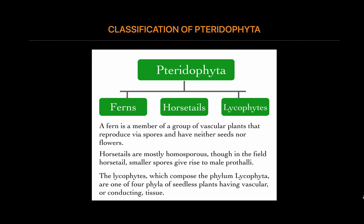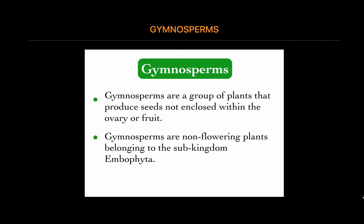This is about Pteridophyta. Now let's study about the fourth subdivision of Kingdom Plantae, Gymnosperms. Gymnosperms are a group of plants that produce seeds not enclosed within the ovary or fruit. The word gymnosperm comes from the Greek words gymnos meaning naked and sperma meaning seed, hence known as naked seeds. Gymnosperms are seed-producing plants, but unlike angiosperms, they produce seeds without fruits.